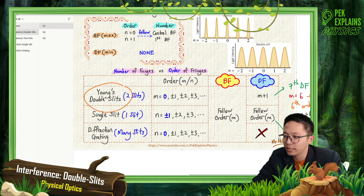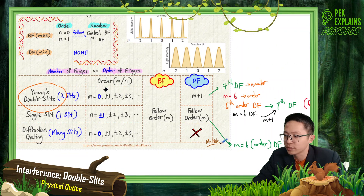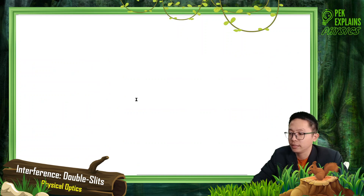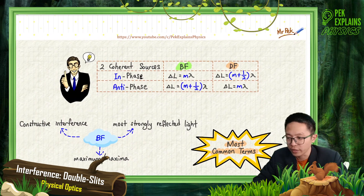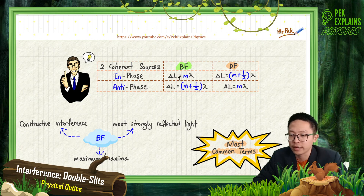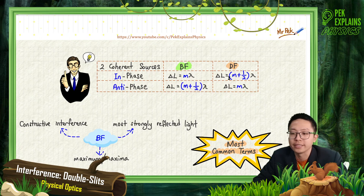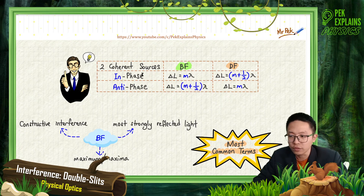For in-phase sources: bright fringe uses Mλ, dark fringe uses (M + ½)λ. Let's look at this. For in-phase source, bright fringe ΔL = Mλ. Dark fringe ΔL = (M + ½)λ.